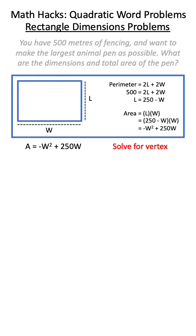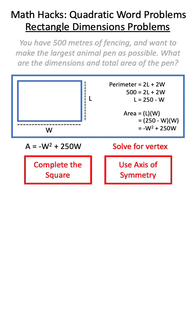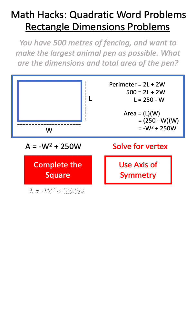Now what we need to do is to solve for the vertex. We can do this through completing the square or using the axis of symmetry. We're going to choose to complete the square.